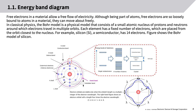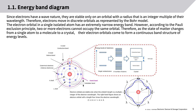Free electrons in a material allow a free flow of electricity. Although being part of atoms, free electrons are so loosely bound to atoms that they can move about freely. In classical physics, the Bohr model consists of a small atomic nucleus of protons and neutrons around which electrons travel in multiple orbits. Each element has a fixed number of electrons placed from the orbit closest to the nucleus. For example, silicon (Si), a semiconductor, has 14 electrons. Since electrons have a wave nature, they are stable only on an orbital with a radius that is an integer multiple of their wavelength, so electrons move in discrete orbitals.